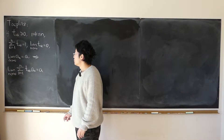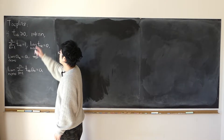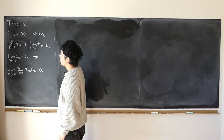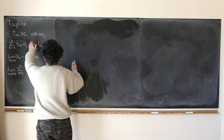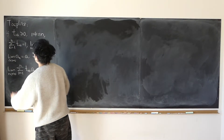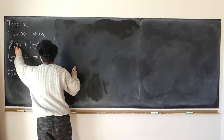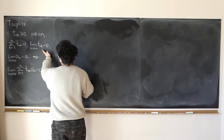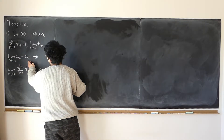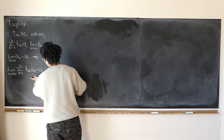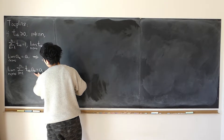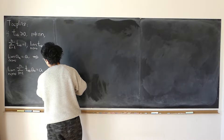In this video, I'm going to prove Toeplitz's theorem. In some cases, it's very useful. We are given some sequence t(n,k), where k is some fixed positive integer between 1 and n. If the sequence is non-negative, and if the sum of t(n,k) from k=1 up to n is equal to 1, and if the limit of t(n,k) equals 0 as n approaches infinity, and if a(n) approaches a, then the conclusion is that the limit of the sum of t(n,k) times a(k), from k=1 to n, is also equal to a.